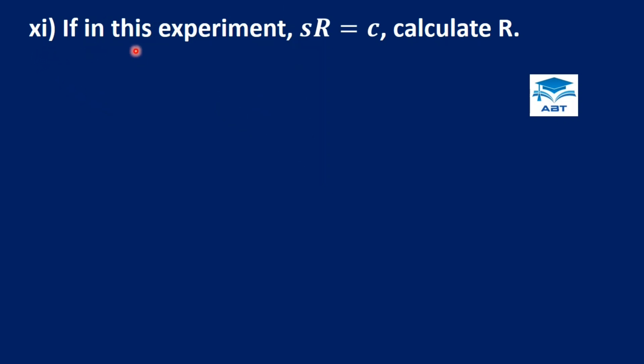If in this experiment sR is equal to c, calculate R. So we have sR is equal to c. We are looking for R so we divide through by s, so we have R is equal to c over s. And then we fix the values for c and s. c is 4 second square and the slope s is negative 4 second square per meter. Second square will cancel out and 4 over negative 4 is negative 1. So we reciprocate per meter and get meter. So R is equal to negative 1 meter.